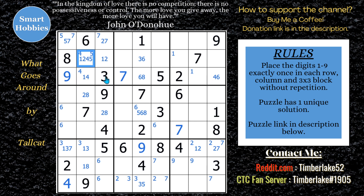What can this cell in row three be? It looks like it can be a one, four, six, or eight. I'm hoping we can eliminate something across here. And then I see it — I see an XY-chain! How cool is this? Let me mark all the cells.